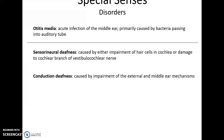Disorders: Otitis media is an acute infection in the middle ear, usually caused by bacteria entering via the auditory tube. Sensorineural deafness is caused by impairment of hair cells in the cochlea or damage to the nerves themselves. And conduction deafness is caused by impairment or damage to the external or middle ear mechanisms — for example, if one of the auditory ossicles is damaged or broken.